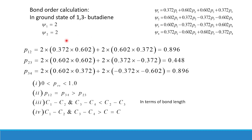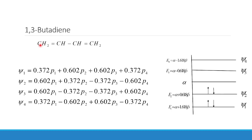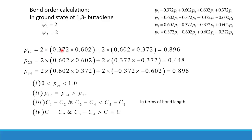We will calculate three bond orders: P12, P23, and P34 — between carbon atoms 1–2, 2–3, and 3–4. The bond order P12 equals 2 × (0.372 × 0.602) from ψ1, plus 2 × (0.602 × 0.372) from ψ2, which comes out to be 0.896.